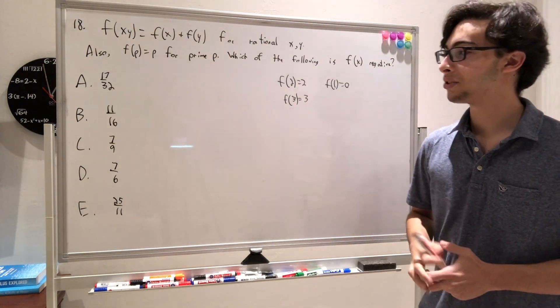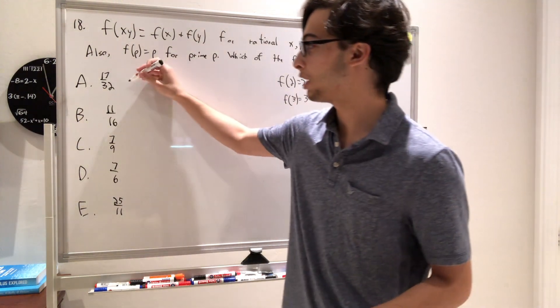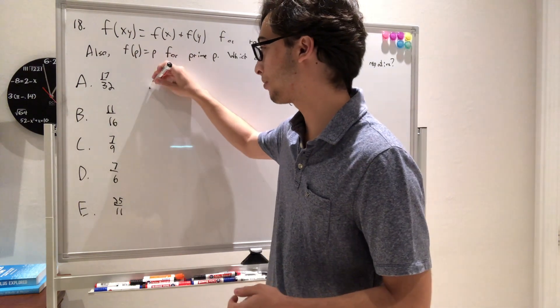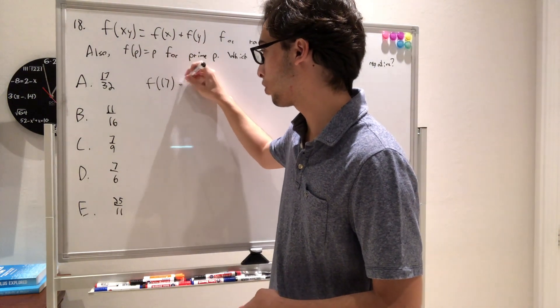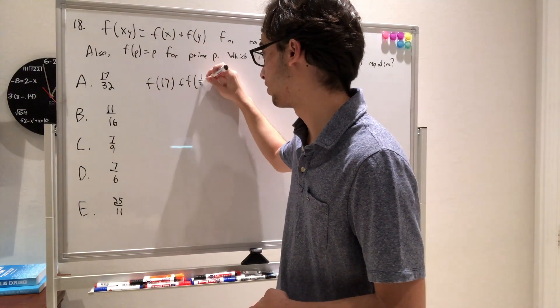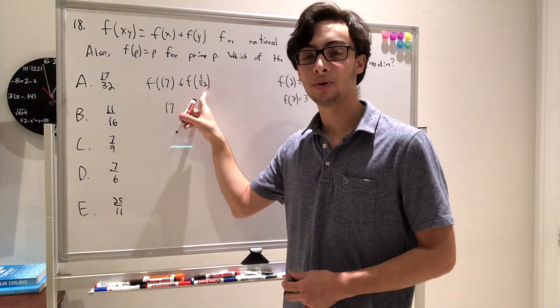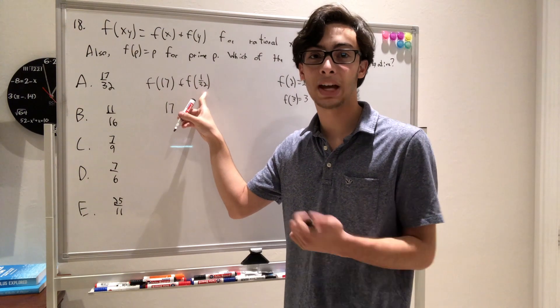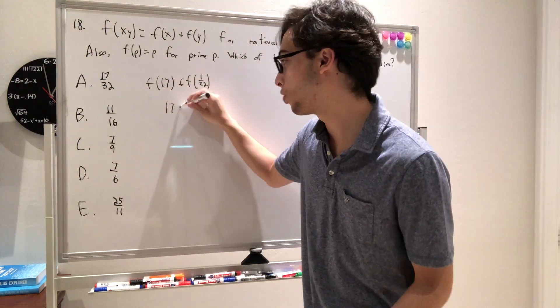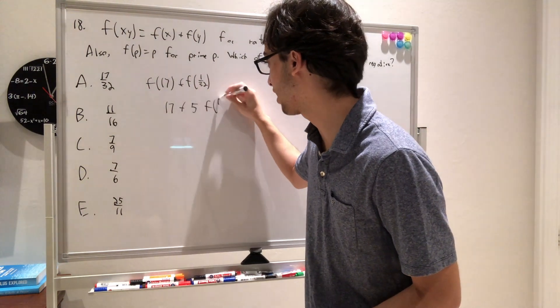Okay, so now what do we do? Well, let's play around with the answer choices. So let's start with a. Well, we know that f of this is going to be equal to f of 17 plus f of 1 over 32. Okay, well, f of 17 is 17, and f of 1 over 32 is the same thing as f of 1 half plus f of 1 half plus f of 1 half five times, or five times f of 1 half.